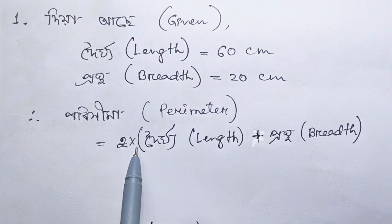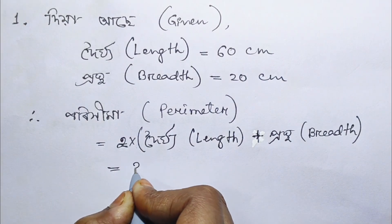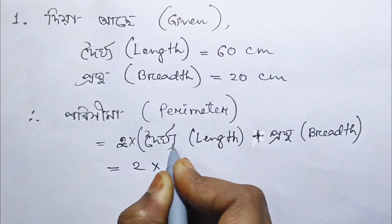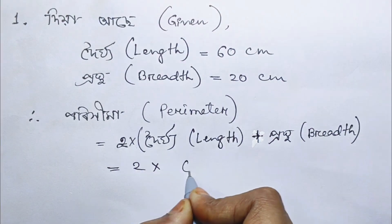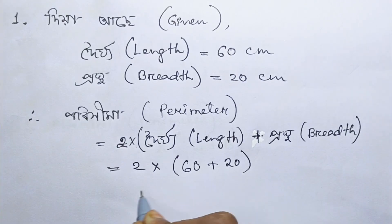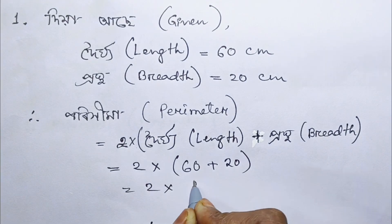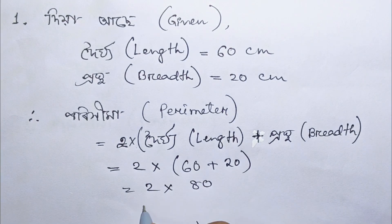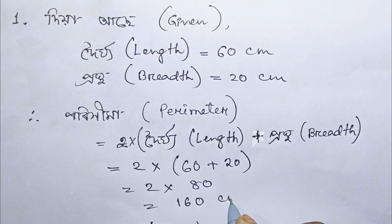The perimeter formula is 2 into (L + B). So, 2 into (60cm + 20cm) = 2 into 80cm = 160cm.